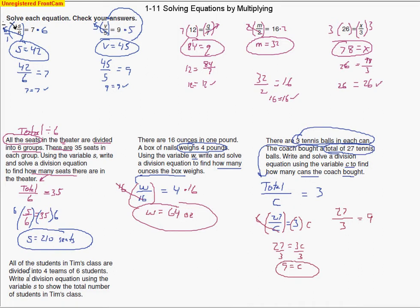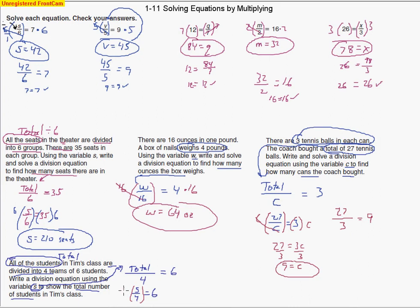Last problem: all of the students in Tim's class are divided into 4 teams of 6 students. The total is being divided into 4 teams, and each team has 6 students. Using variable S for the total number of students, our equation is S over 4 equals 6. We multiply by 4 on both sides, canceling out the 4s, leaving S equals 24. So 24 students are in the class.